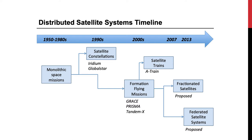In its essence, the idea of fractionated satellites foresaw the distribution of functionalities of a single monolithic satellite into a number of flight units. More recently, in 2013, the concept of Federated Satellite Systems, or FSS, appeared in the scientific literature.